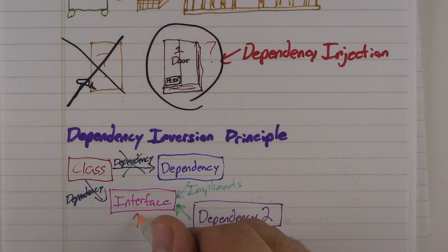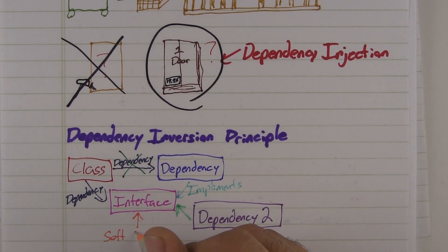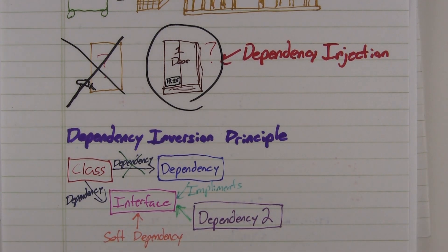By using dependency injection, we decouple our code from the lower-level implementations, making our code cleaner, easier to modify, and easier to reuse.